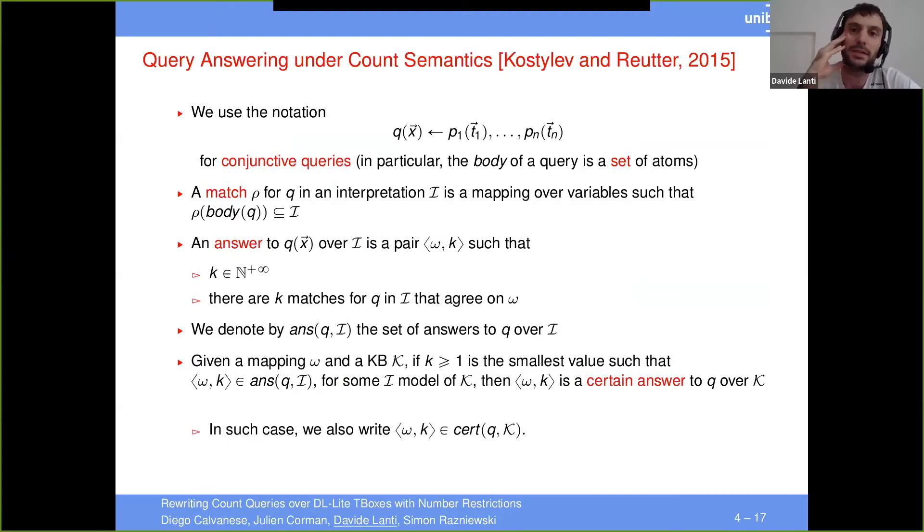Now, Quentin already said all of this. So this is the count semantics introduced by Kostylev and Reuter in 2015. So here we use their very same notation. This is notation which is very similar to the notation of classical conjunctive queries.